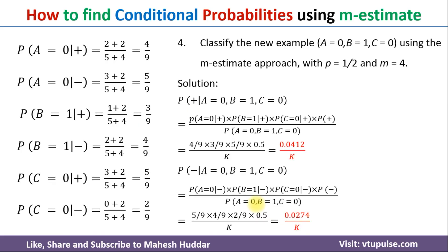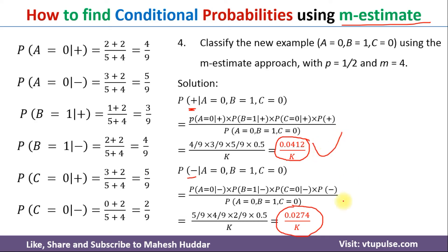Once we calculate all these conditional probabilities, we use the same Naive Bayes equation and substitute these values. We get the posterior probability for positive and for negative. Now, the value for negative is not zero, because none of the M-estimate conditional probabilities are zero — we have avoided the zero probability issue. Comparing the two values again, the positive posterior is larger, so the new example is again classified as positive.